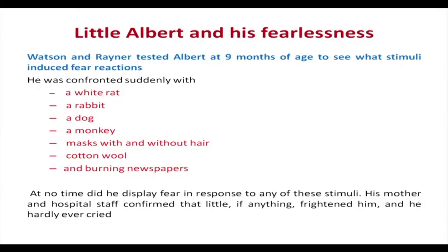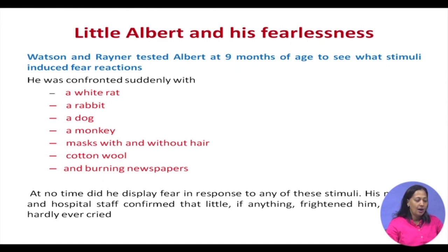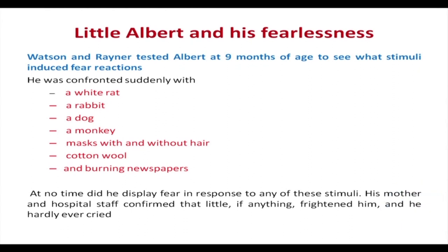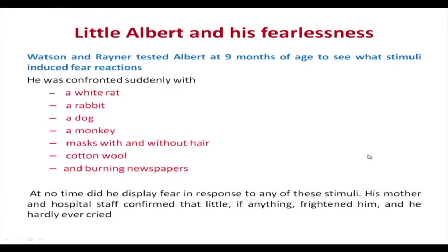Little Albert, when he was 9 months of age, was confronted with a white rat, a rabbit, a dog, a monkey, masks with and without hair, cotton wool, and burning newspapers. It was seen that Albert showed no response of fear at all to any of these stimuli. His mother and other hospital staff confirmed that Albert was hardly frightened by anything and hardly ever cried, which made him more suitable for the experiment.